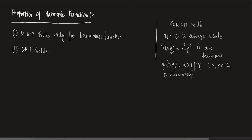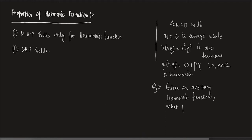We have found three different sorts of functions: a constant function, a linear function, and a quadratic one. There is a huge variety of harmonic functions. Without solving the equation, it is not possible to find all possible harmonic functions. So the question is: given an arbitrary harmonic function — not a special one — what properties can one expect?